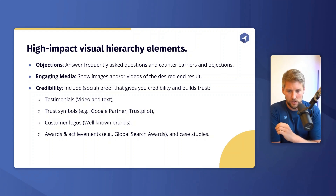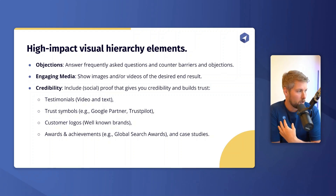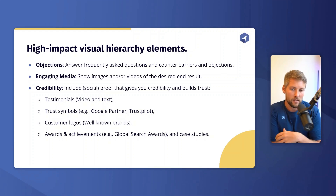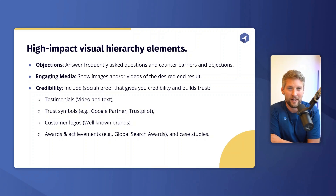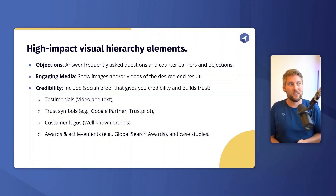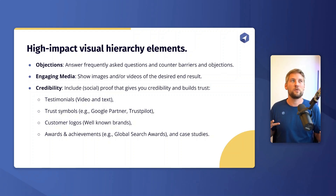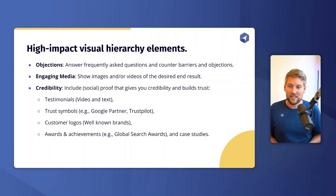You can also use trust symbols — for example, as a Google Ads agency, include a Google Partner logo or a Trustpilot badge so people know your reviews are real. Using a third-party review platform adds credibility. Include customer logos, but use well-known brands — if you include unknown local businesses, visitors may assume you don't work with bigger clients. Always include relevant logos of well-known brands if you have them.